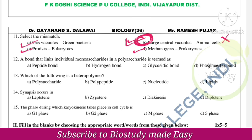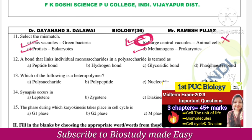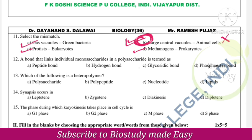A bond that links monosaccharides in polysaccharides — note the bonds: in carbohydrates the bond is glycosidic bond, in proteins the bond is peptide bond. So the right answer is option C, glycosidic bond. Peptide bond is found in proteins.